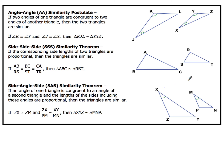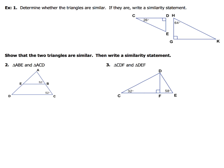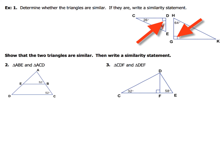Now let's take a look at our first example: determine if the two triangles are similar; if they are, write a similarity statement. One of the first things I want to do is find the missing angles. I've got a 26° angle here, and this little box means 90°. So the missing angle E = 90 − 26 = 64°. That's the same as angle H over in the other triangle, and angle G and angle D are both 90° in each triangle.